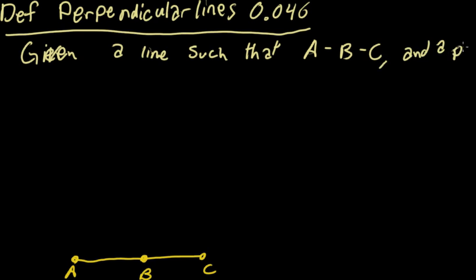And a point M, not on line AC. So we have some other point randomly out here. I'm going to draw it up here for a certain reason. I want it directly above point B, but I'm not going to have that in the definition.